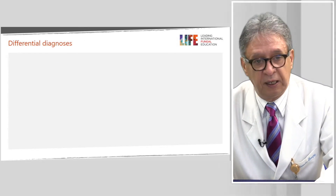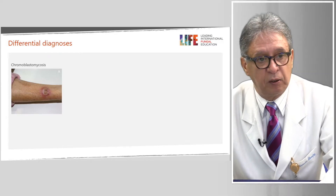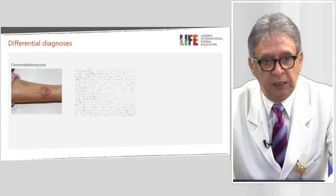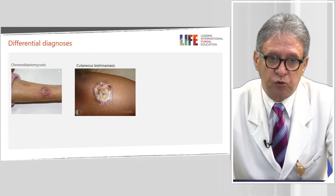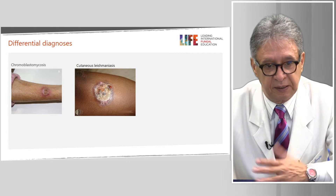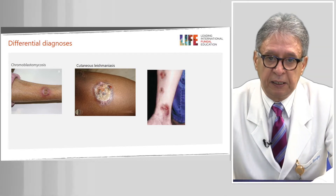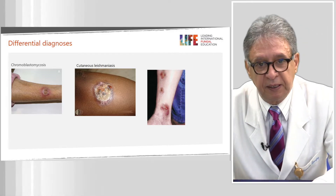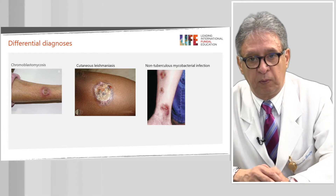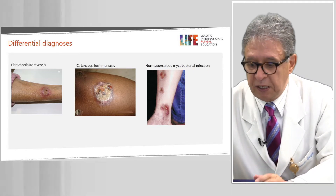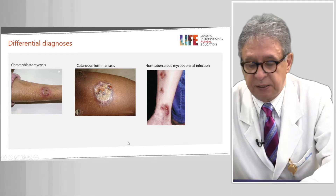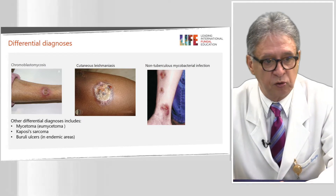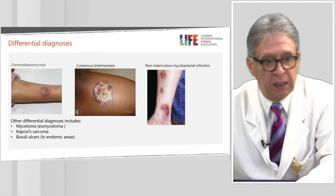For differential diagnosis, keep in mind chromoblastomycosis and cutaneous tuberculosis. If you live in zones with leishmaniasis, remember it is very similar to this disease. For the lymphangitic pattern, keep in mind non-tuberculous mycobacterial infection, especially caused by Mycobacterium marinum. Other differential diagnoses include mycetoma, Kaposi's sarcoma, and Buruli ulcers.